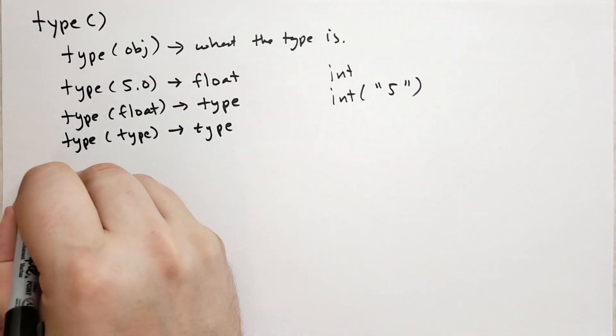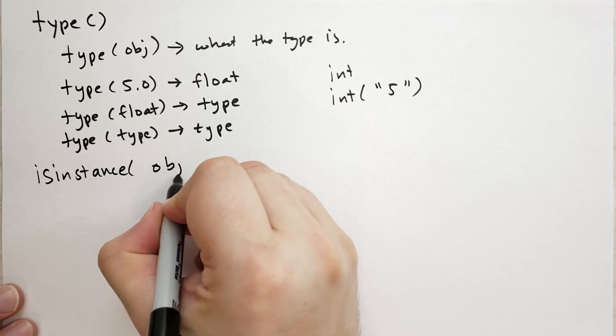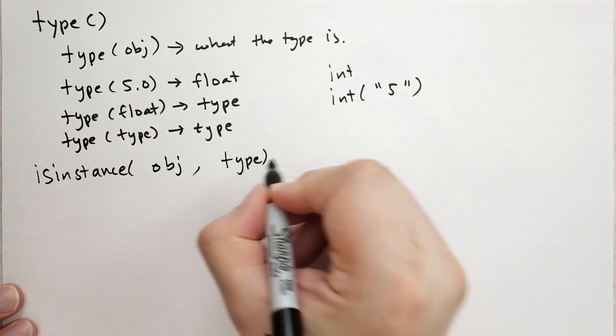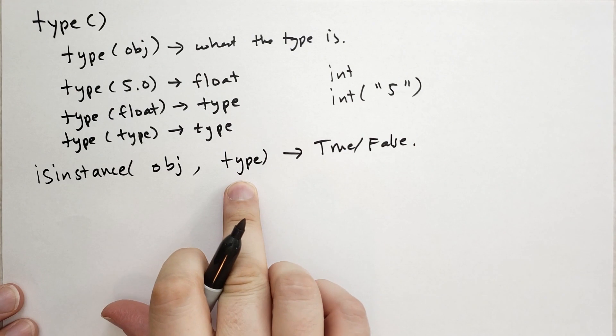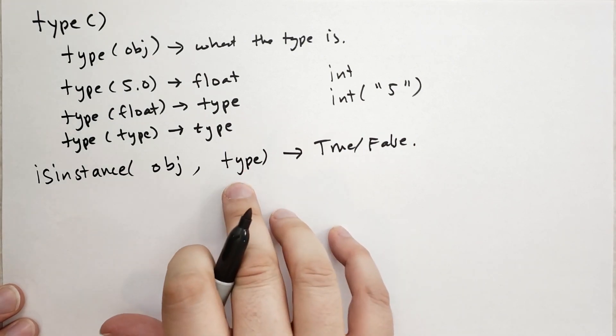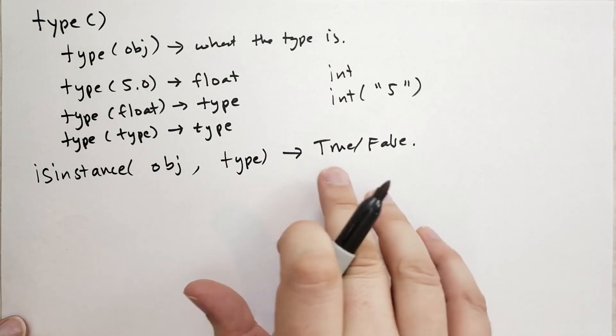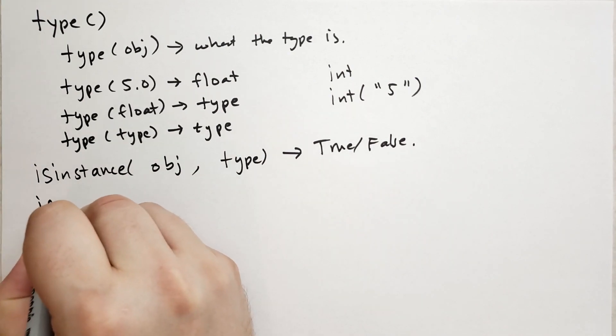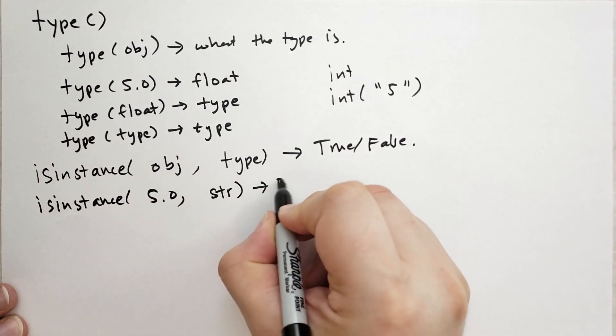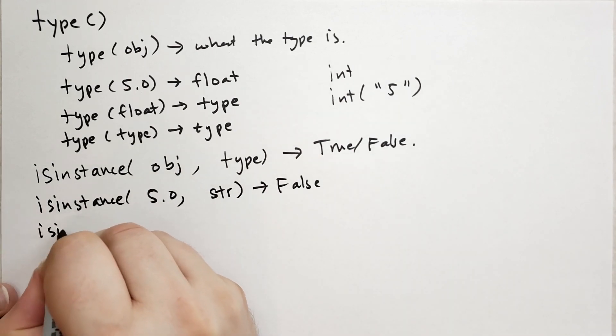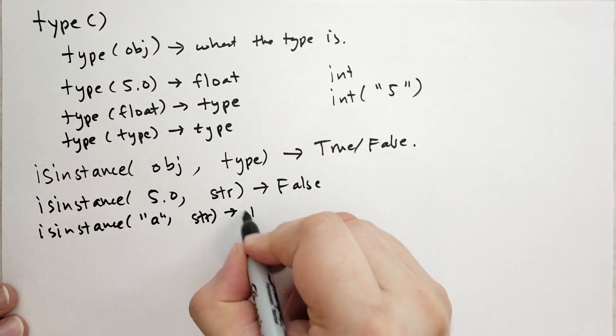Last little thing I want to talk about is isinstance. There's two ways to call isinstance. You can call it with an object and then a type. And this will return true or false. If the object is of the type or of a type derived from this type or inheriting that type, we're going to talk about inheritance in a completely separate video. Then this will return true. Otherwise, it will return false. So, for instance, I might say isinstance 5.0, is that a string? And the answer for that will be false. But if I said isinstance a string, that will give me true.